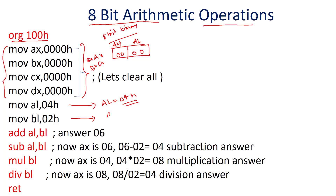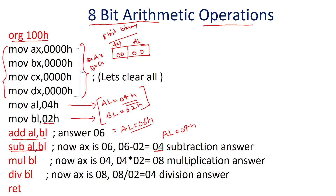The next instruction moves BL with 02H. We have now successfully stored two numbers in two registers. When the ADD AL, BL instruction executes, 04 and 02 are added and the result is stored in the accumulator register, so AL becomes 06H. The SUB instruction then subtracts BL (02) from AL (06), giving a new AL value of 04H. Next, MUL BL multiplies — by default, multiplication always uses the accumulator — so AL value 04 multiplied by 02 gives 08H in AL.